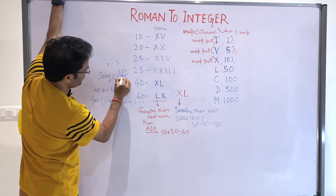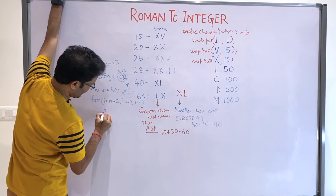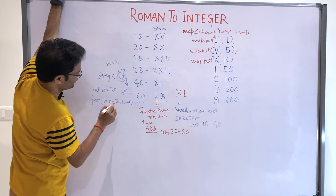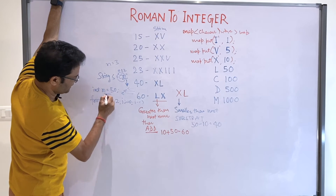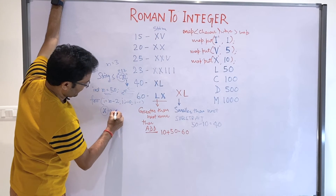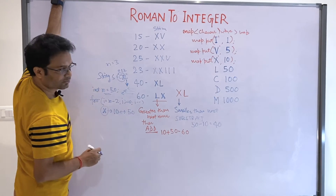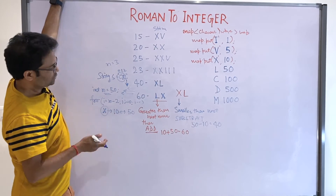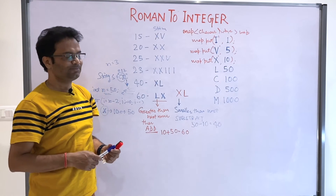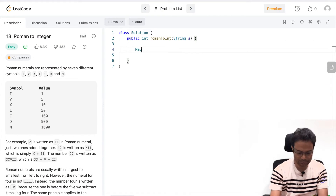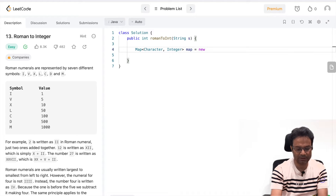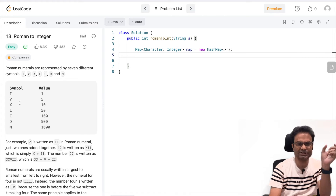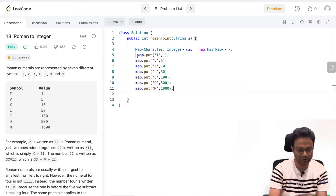As discussed, first take one map with character and integer entries and give it a name. You can just copy-paste all the symbol-to-value entries. Then take the length of the given string as n. Take the rightmost value using s.charAt(n-1), pass that character to map.get() to retrieve its value, and keep it in your result variable num. All the Roman symbol entries should be populated in the map.